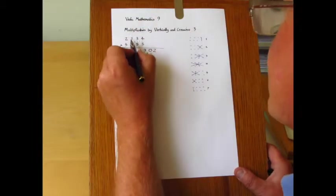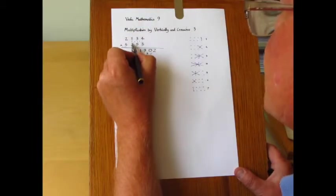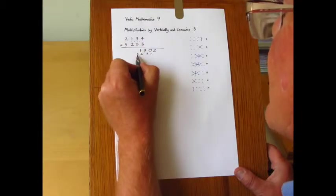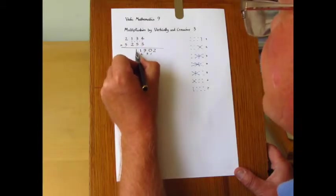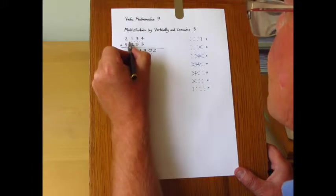Now the fifth step I'll put the dot here we've got two times five is ten. Add two is twelve. Add nine is twenty-one. Add three is twenty-four.